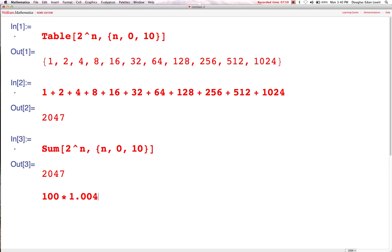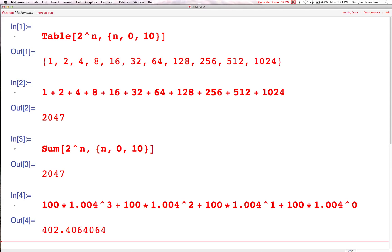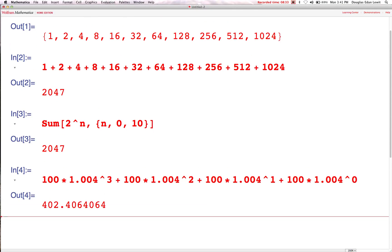I've got 100 times 1.004 to the power 3 plus 100 times 1.004 to the power 2 plus 100 times 1.004 to the power 1 plus 100 times 1.004 to the power 0. Oh, wow, a lot of talking and a lot of typing. This is exhausting. Shift, enter. Okay, so the answer, rounded out to the nearest penny, is going to be $402.41.